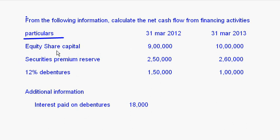The equity share capital as at 31st March 2012 was 9 lakh and 31st March 2013 it is 10 lakh, so the issue of share capital is 1 lakh. Whenever you have securities premium reserve, it is also taken as part of the issue of equity shares because it is related to equity shares. The difference in securities premium — 2,50,000 to 2,60,000 — is 10,000, and that will be added to the issue of equity shares.